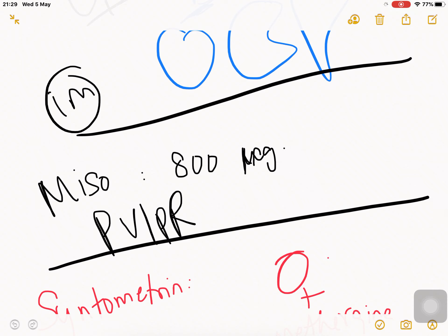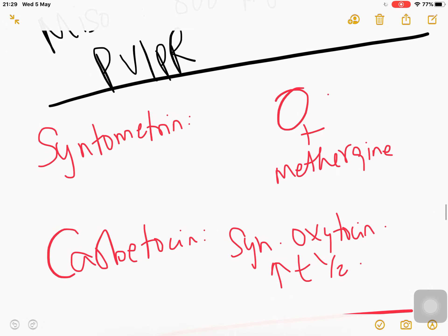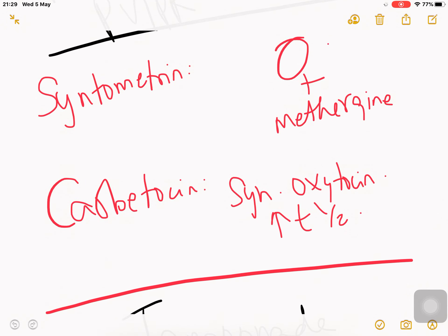The other drug is misoprostol. The above drugs - oxytocin, methergine, and carboprost - were given IM or IV. Misoprostol is the weird one because it's given PV or PR, meaning per rectal or per vaginal route. The dose is 800 micrograms. Syntometrine is oxytocin combined with methergine. Carbetocin is synthetic oxytocin with a longer half-life.